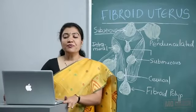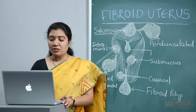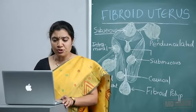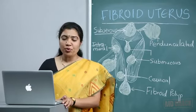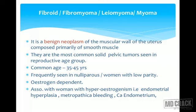Welcome. Today we are going to see about fibroid uterus. This is a very important topic regarding the exam point of view as well as clinically. Fibroid is also called as fibromyoma, leiomyoma, or myoma. Any of these terminologies used anywhere, please don't get confused — the question means they are asking about a fibroid.